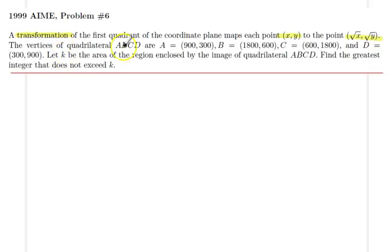The vertices of our quadrilateral are given as A, B, C, and D. We would like to find the area of the region enclosed by the image of the quadrilateral ABCD under this transformation, and find the greatest integer that does not exceed k, the floor of k.